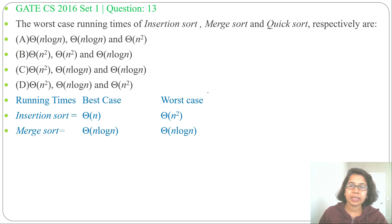For quick sort, its best case running time is theta of n log n, and worst case running time is theta of n squared.